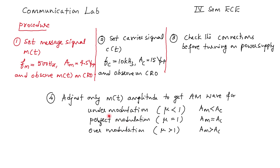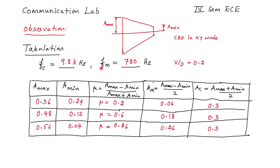With a little adjustment of the carrier and the message signal, we are able to get the three conditions for AM: under modulation, perfect modulation, and over modulation. The experiment is conducted in the lab and we have obtained the results as shown.